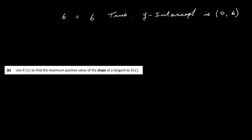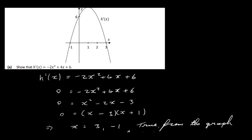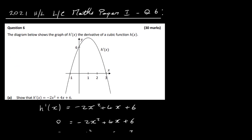Let's have a look at the next part. We have h prime x, and we've got to use it to find the maximum possible value for the slope of a tangent to h of x. Looking at our graph, remember this is the graph of the slopes of tangents to h of x. The maximum slope is going to be somewhere above 6, and there seems to be a maximum slope at x equals 1 — halfway between minus 1 and 3.